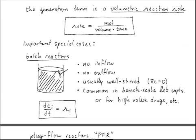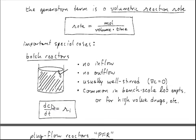There are some important special cases. In a batch reactor, at constant volume, we have no inflow and no outflow. Usually we assume that these batch reactors are well stirred — that is to say, there are no concentration gradients in the reactor. This is very common in bench scale lab experiments or for production of high value drugs and things that you only need small quantities of.